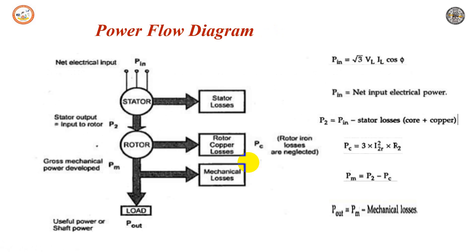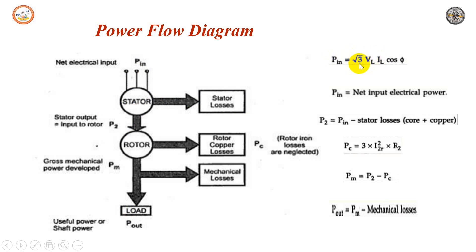An induction motor always converts electrical power input to mechanical power. The various stages from electrical input to the useful shaft power constitute the power flow in an induction motor. The three-phase supply is given to the stator as the net electrical input. If the motor power factor is cos φ and VL, IL are line values, then the power input to the stator, P_input, is given as √3 · VL · IL · cos φ.